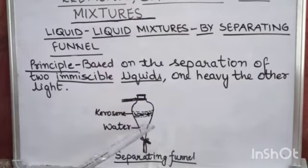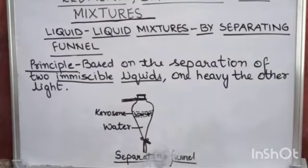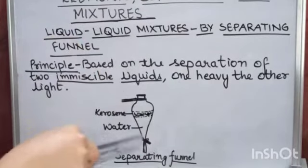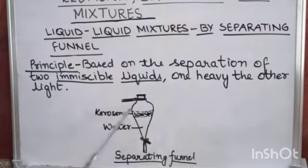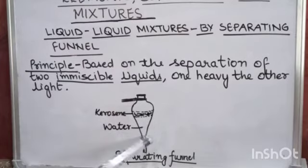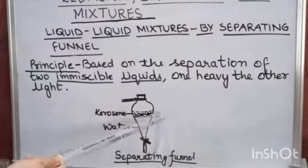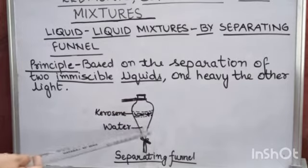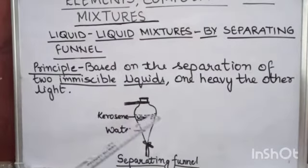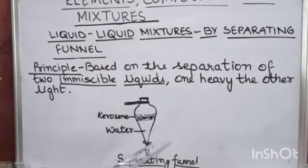The one which is lighter will float above. Here we have taken the mixture of kerosene and water — or we can take oil and water, which are immiscible liquids. When we pour the mixture of oil and water into the funnel, the water which is heavier than oil will stay at the bottom, and kerosene will float above the heavier liquid.